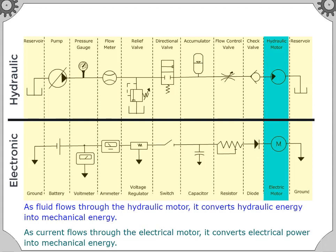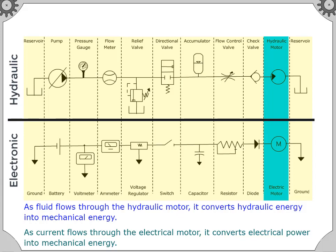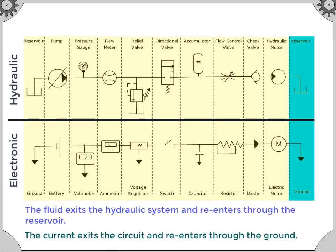As fluid flows through the hydraulic motor it converts hydraulic power into mechanical energy. As current flows through the electrical motor it converts electrical power into mechanical energy. The fluid exits the hydraulic system and re-enters through the reservoir. The current exits the circuit and re-enters through the ground.